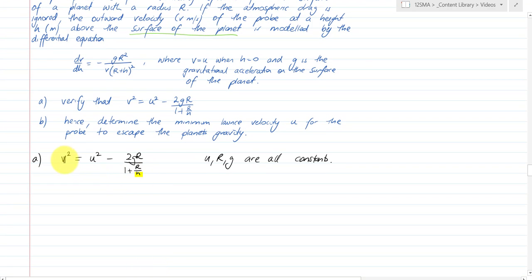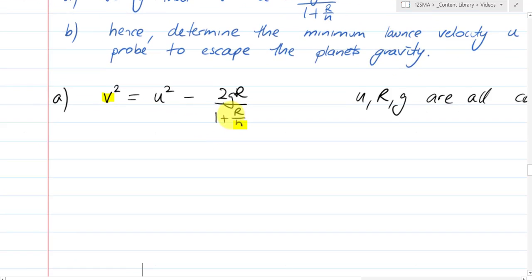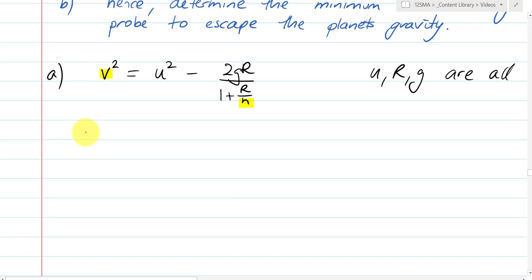h varies and v varies. v varies as per h. So what we want to find is dvdh. So I'm going to zoom in here. We're going to take ddh of both sides where v is a function of h. Hopefully you recognize this as our good friend implicit differentiation.